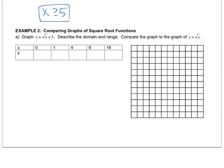So when I plug in 0, I get the square root of 0 plus 3. Well, the square root of 0 is 0, so that gives me 3. Then when I plug in 1, I get the square root of 1 plus 3. The square root of 1 is 1, so this gives me 4. When I plug in 4, I get the square root of 4 plus 3. The square root of 4 is 2, and so that gives me 5.